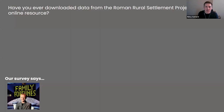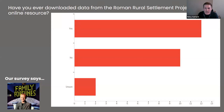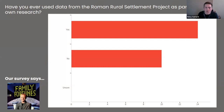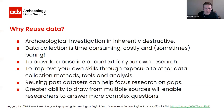I asked in the survey whether any of you had downloaded data from the Roman Rural Settlement Project — more than half said yes, which is encouraging. And I asked whether you had used data from the project as part of your research — again, more than half said yes. The framing was necessarily broad; it wasn't limited to formal citation in publications, but also includes data reuse as part of broader research activities.